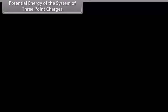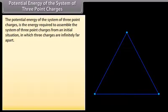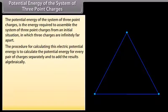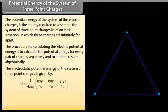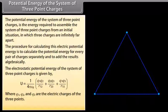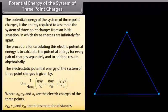Potential energy of a system of three point charges: This is the energy required to assemble three point charges from an initial situation in which they are infinitely far apart. The procedure is to calculate the potential energy for every pair of charges separately and add the results algebraically. The electrostatic potential energy is given by U equals 1 upon 4π ε₀ multiplied by (Q1 Q2 upon R12 plus Q2 Q3 upon R23 plus Q1 Q3 upon R13), where Q1, Q2, Q3 are the charges and R12, R13, R23 are their separation distances.